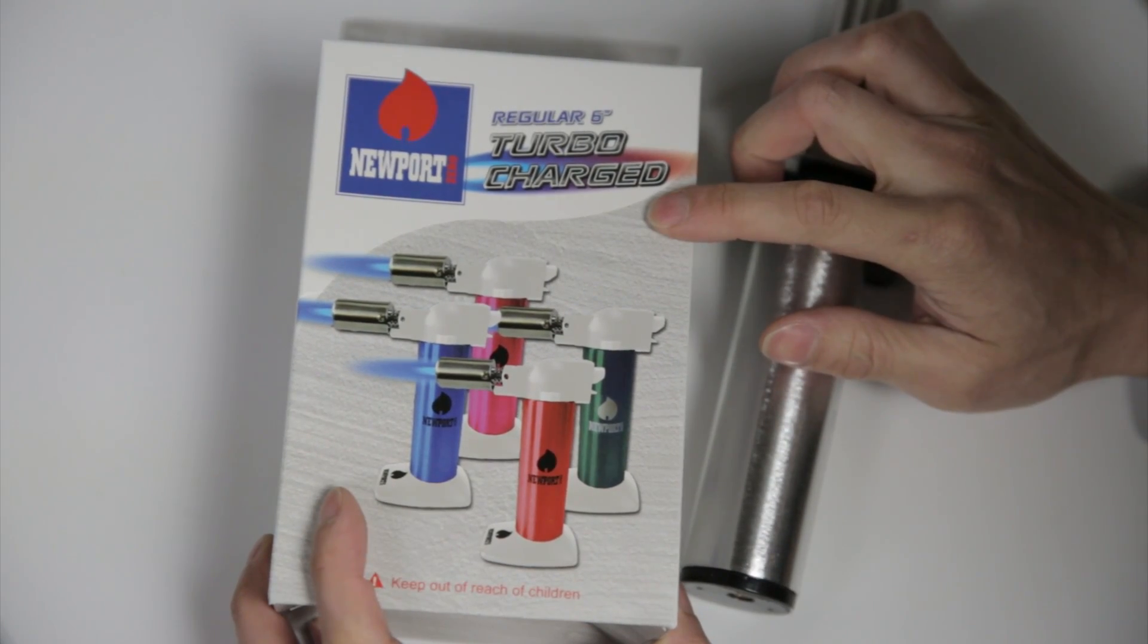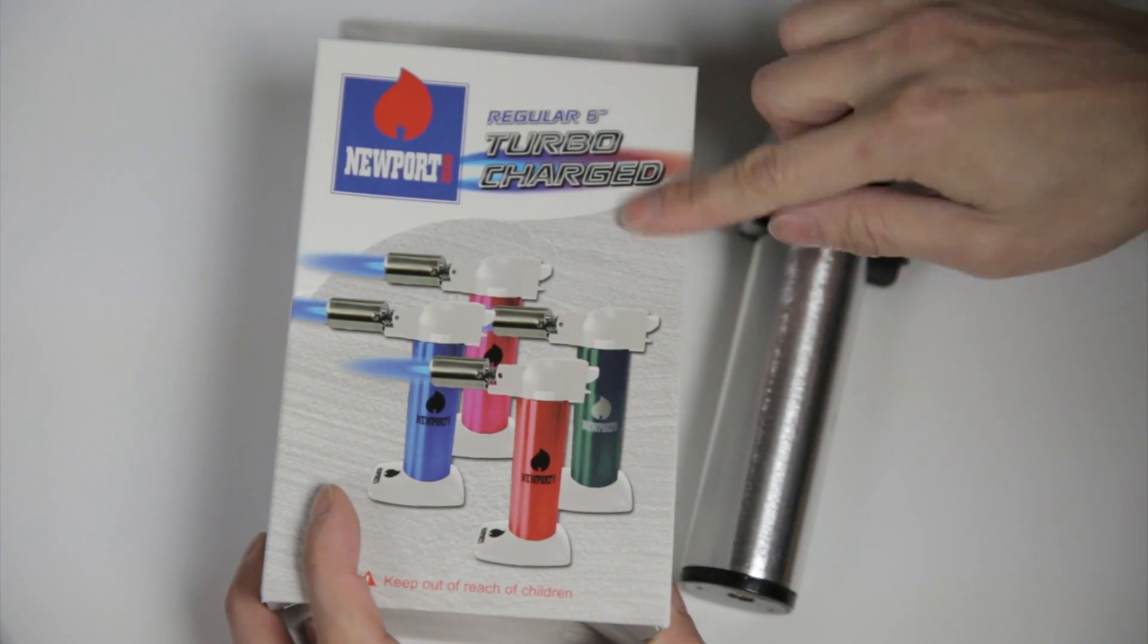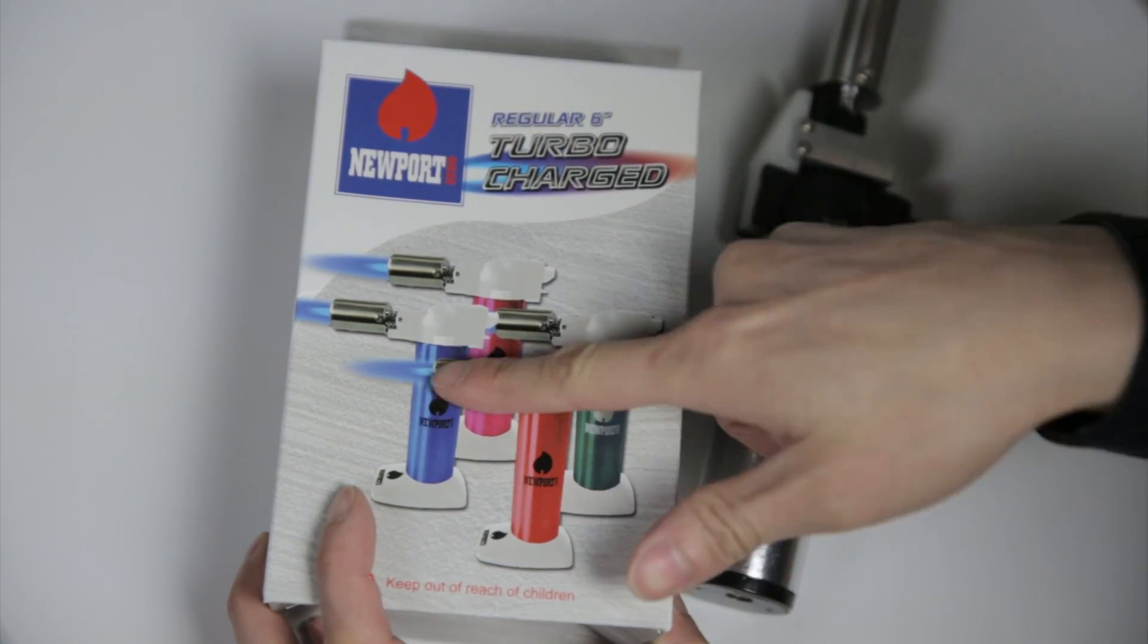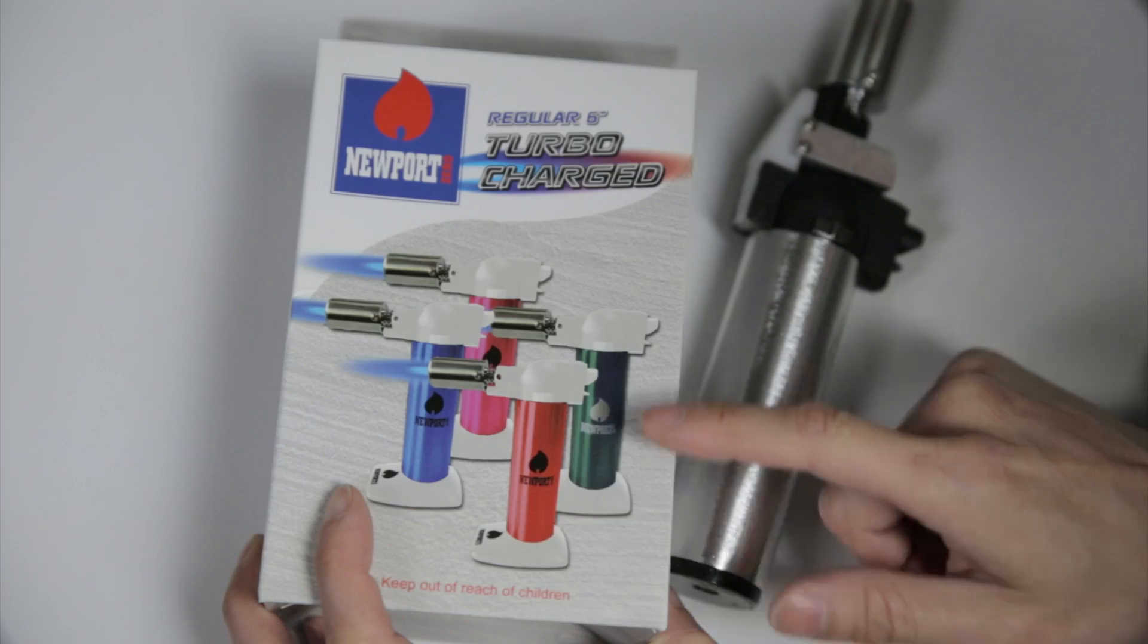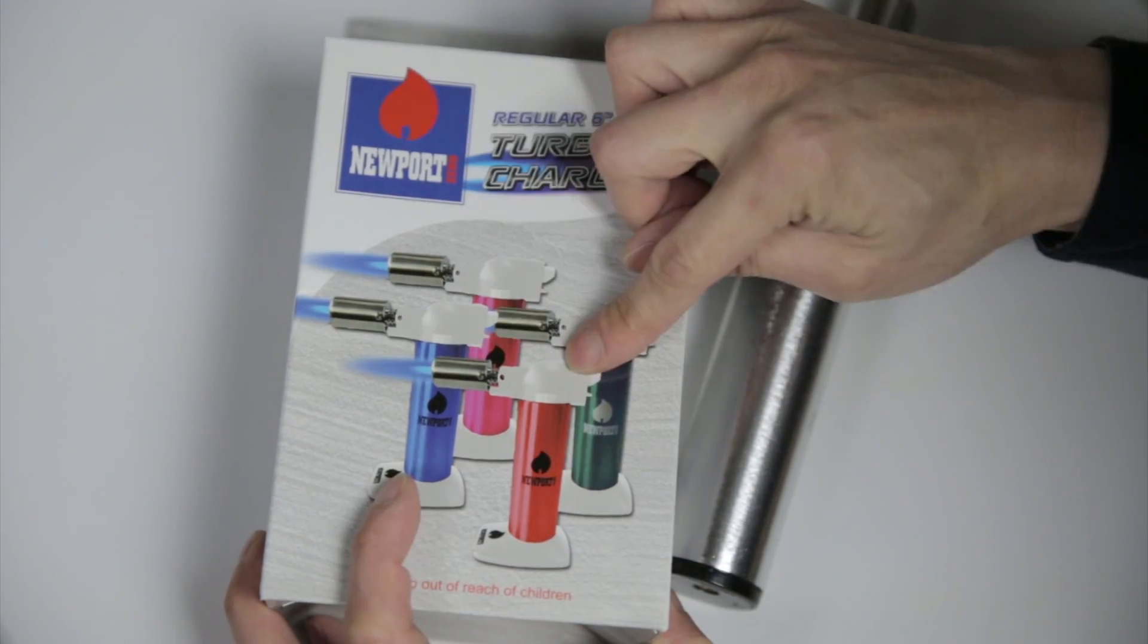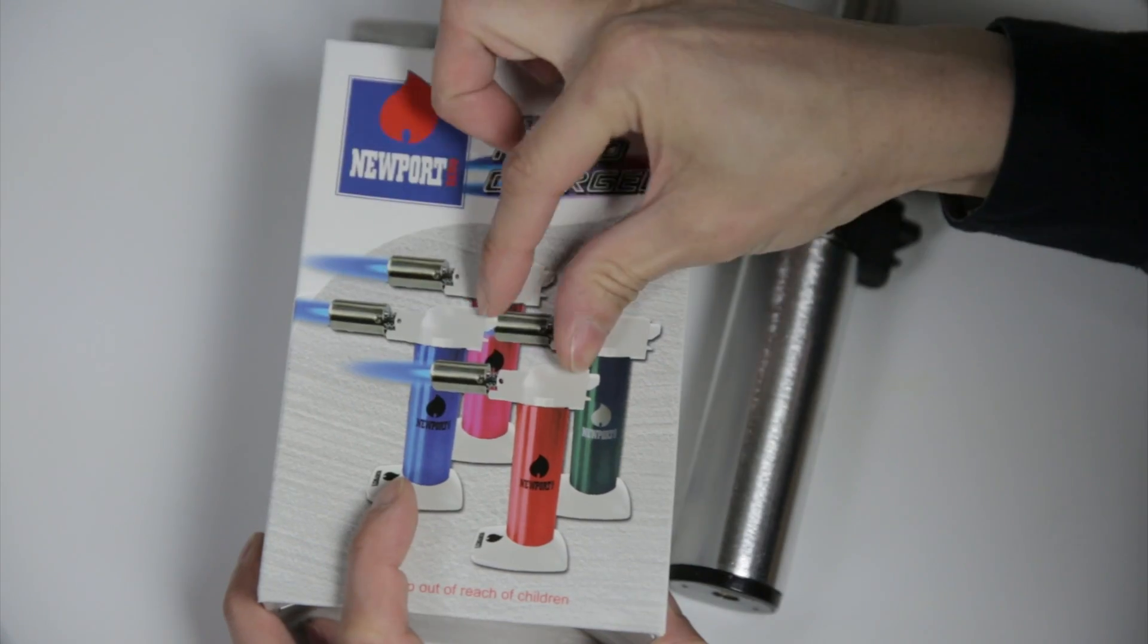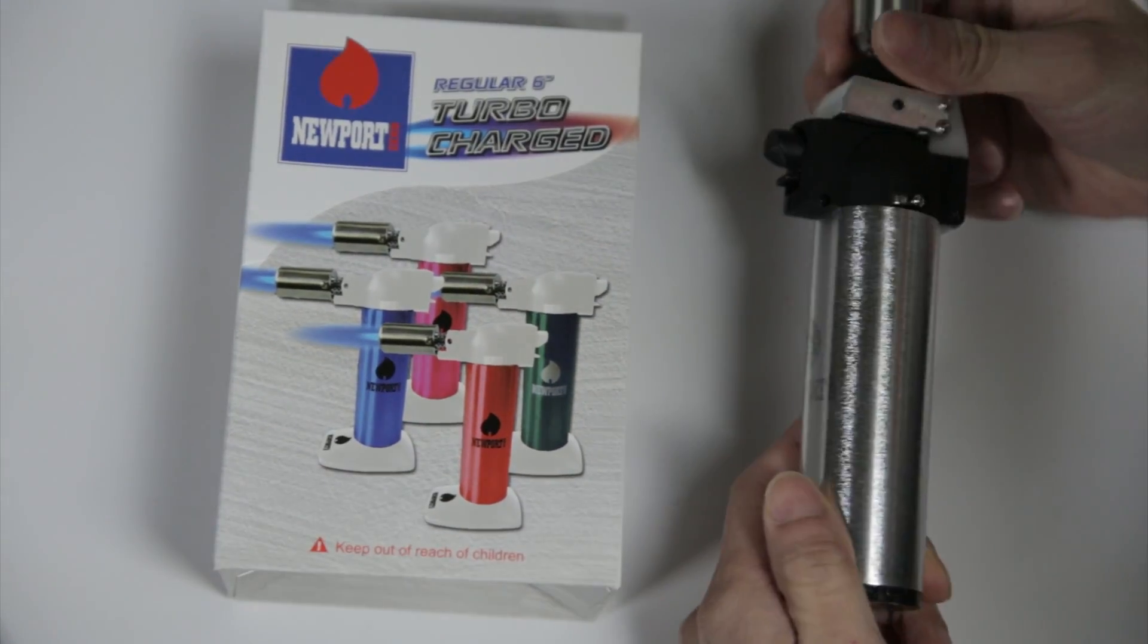I started with this Newport Zero butane torch lighter I bought on Amazon. I'll leave a link down below if you want to get one. You can see that the torch is actually right angled and much of these butane torches are right angled, so it doesn't look like a lightsaber very much. You really wanted to twist that and make it straight, and that's exactly what I did here.